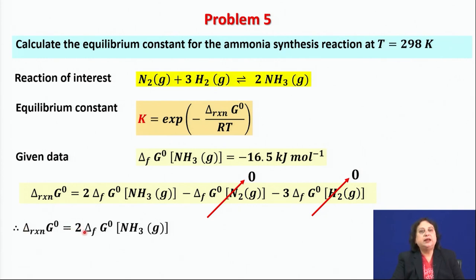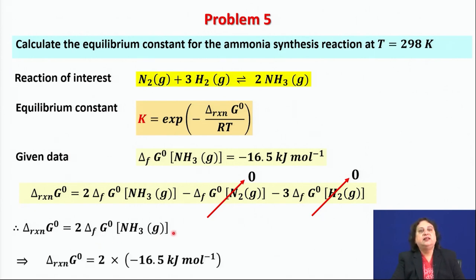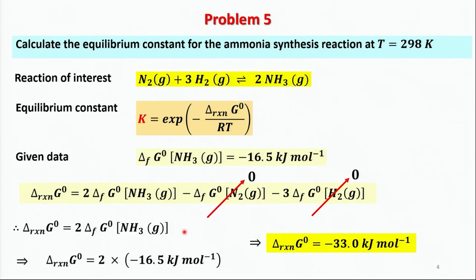Therefore, ΔG°rxn = 2 × ΔG°f(NH₃, g). From standard thermodynamic tables this turns out to be −33.0 kJ/mol. With this value, we can now substitute it into the equilibrium constant expression.